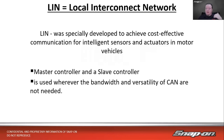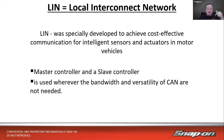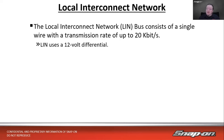LIN bus was specially developed for cost-effective communication between intelligent sensors and actuators in motor vehicles. It uses a master-slave architecture — one master and one or more slaves daisy-chained together. It sends digital data back and forth, such as between a window switch and a window motor. It's used where we don't need the bandwidth of CAN — just simple on/off or up/down type data.